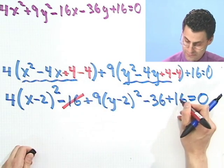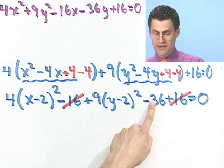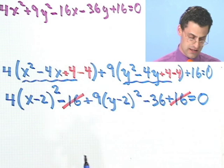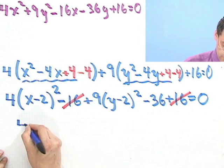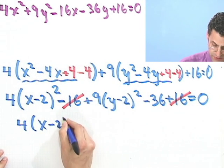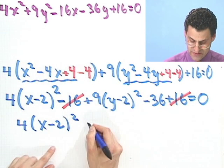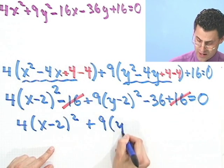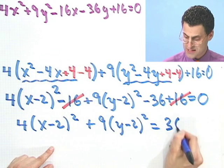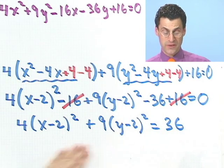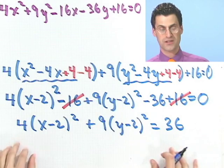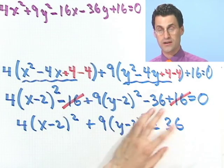This minus 36 I can bring to this side and what I see is 4(x - 2)² + 9(y - 2)² = 36. Let me now divide everything through by 36 because I want a 1 here, because I want something squared plus something squared equals 1.